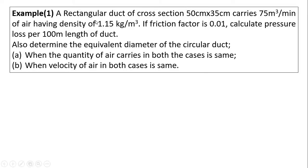The first numerical is as follows: a rectangular duct of cross section 50 centimeter by 35 centimeter carries 75 meter cube per minute of air having density 1.15 kg per meter cube. If the friction factor is 0.01, calculate the pressure loss per 100 meter length of duct. Also determine the equivalent diameter of circular duct when (a) quantity of air carried in both cases is the same, and (b) velocity of air in both cases is the same.